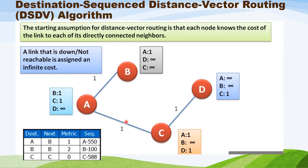For node C, the nearby nodes are A and D. A is reachable within one hop, so A=1; D is reachable within one hop, so D=1; B is not reachable, so B=infinity. For node D, the nearby node is only C, so C=1, while A and B are set to infinity. After initializing, we update the entire routing table by sharing the routing table with nearby nodes to replace all infinity values.